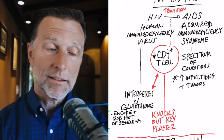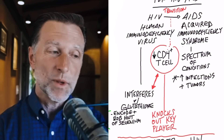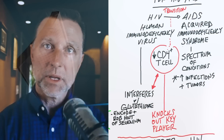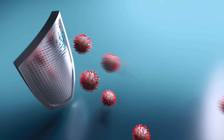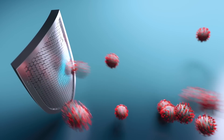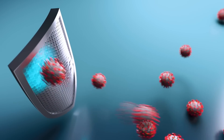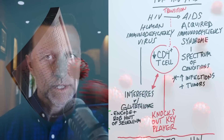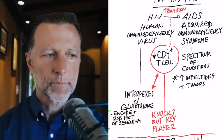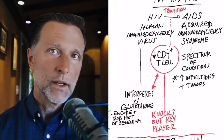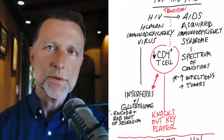Without that key player, the T helper cell, your immune system cannot coordinate with the other players and launch attacks — the defense systems. It can't provide any protection. The T helper cell is such a vital, essential player in your immune system.